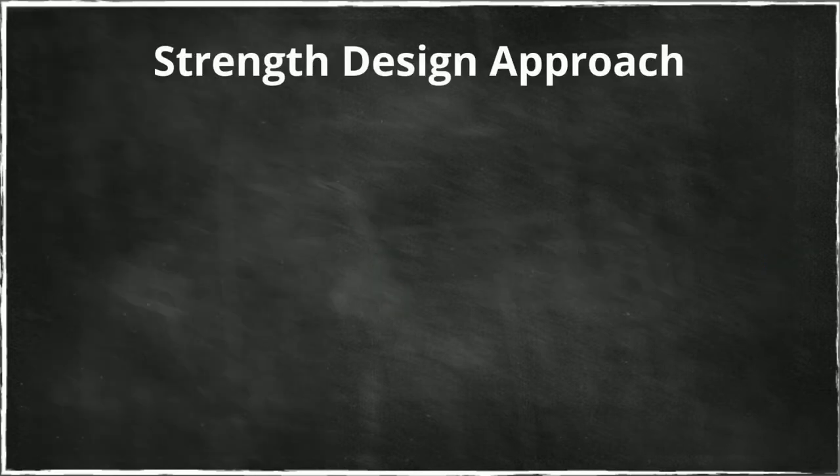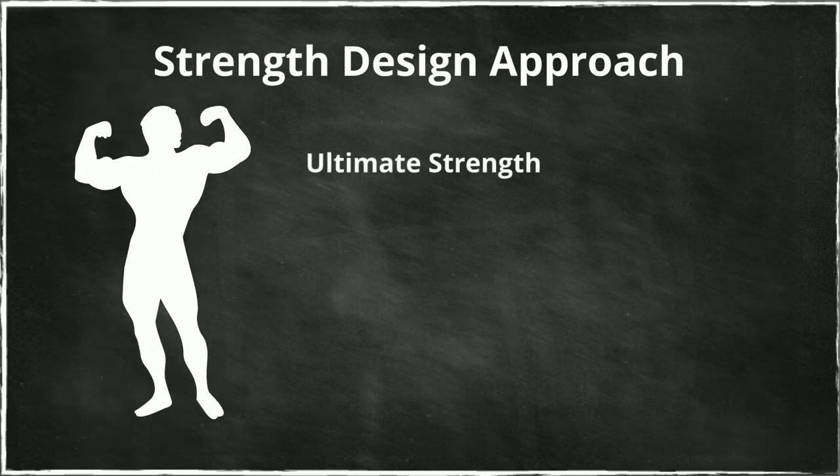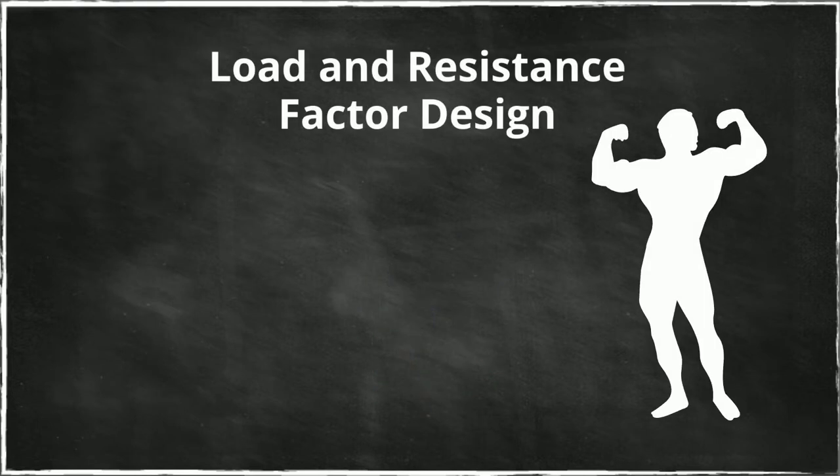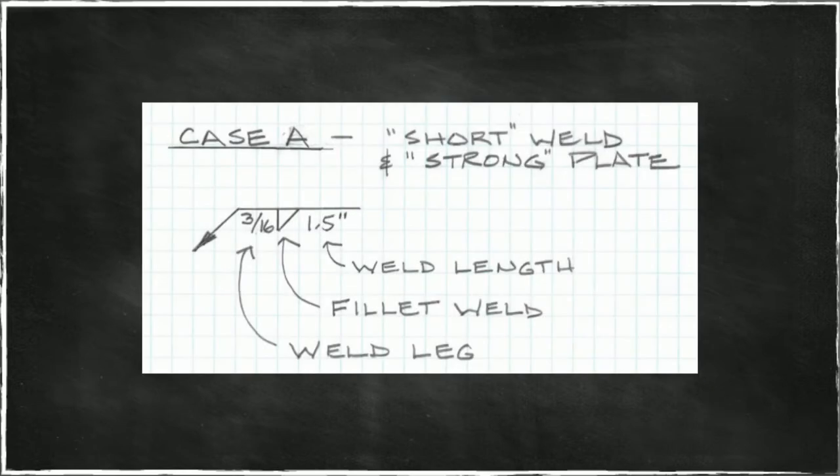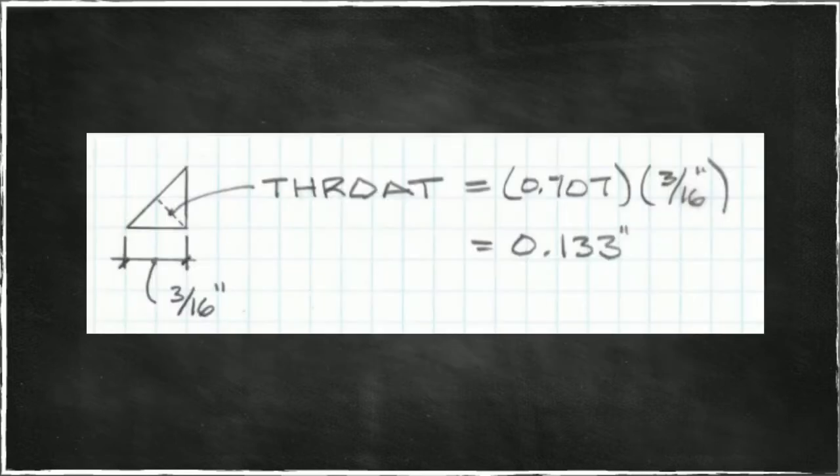We're going to design using a method called the strength design approach. It's based on ultimate strength considerations, sometimes abbreviated SD and sometimes referred to as load and resistance factor design or LRFD. Our first case, which is our short weld and strong plate, we're going to have a weld leg dimension of 3/16ths of an inch, a fillet weld that is one and a half inches long. In this case our throat is of course 0.707 times the 3/16ths leg dimension or 0.133 inches.